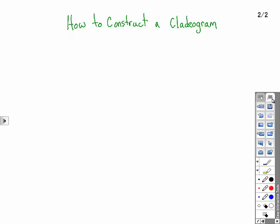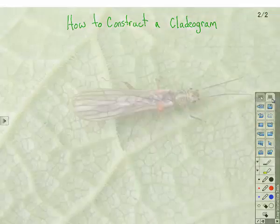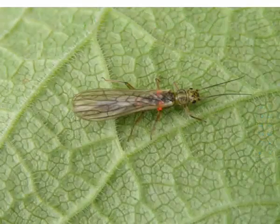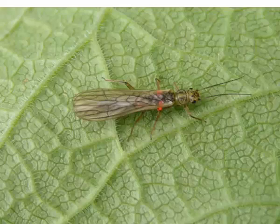We're going to use an example of constructing a cladogram to classify the most awesome insects on the planet: stoneflies.